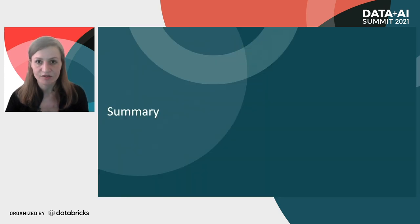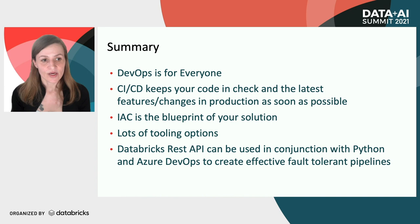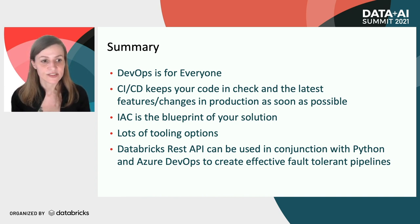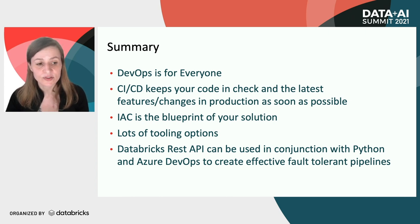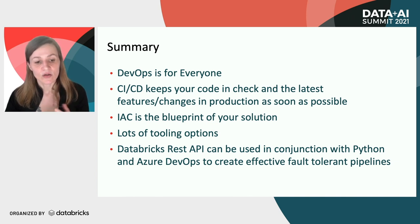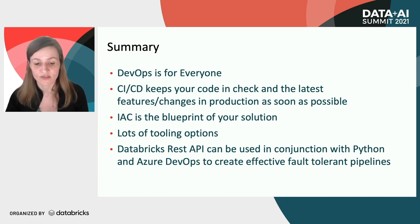Finally, our summary: DevOps is for everyone. CI/CD keeps your code in check and gets the latest features and changes into production as soon as possible. Infrastructure as code is the blueprint of your solution, with lots of tooling options. And the Databricks REST API can be used in conjunction with Python and Azure DevOps to create effective, fault-tolerant pipelines.